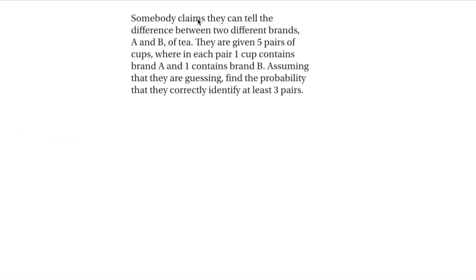The next question says somebody claims they can tell the difference between two brands of tea, A and B. They are given five pairs of cups where each pair contains one of each brand. Assuming they are guessing, find the probability they correctly identify at least three pairs. We can use the binomial distribution: same probability, fixed number of trials, and independent trials.